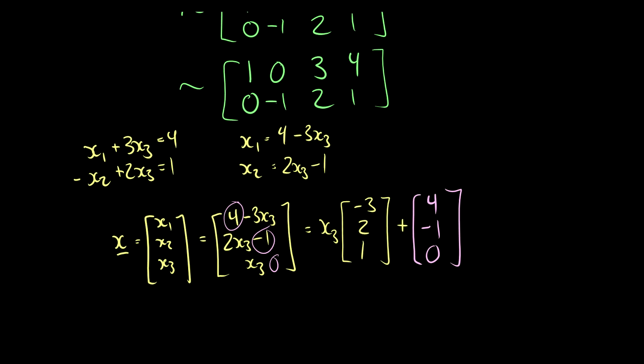So here's our translation, 4 negative 1, 0. If this was a homogeneous equation, this x3 times the vector negative 3, 2, 1 would be the solution. But this 4, negative 1, 0 is our translation that makes it ax is equal to b.